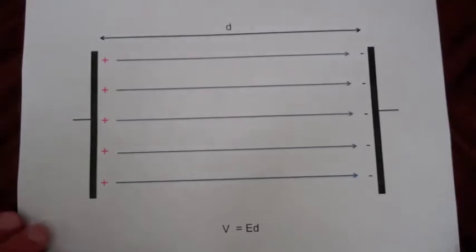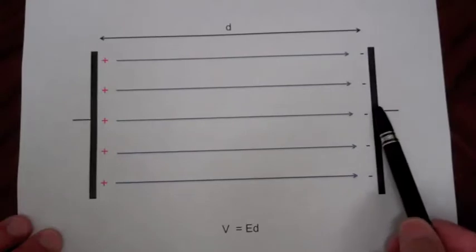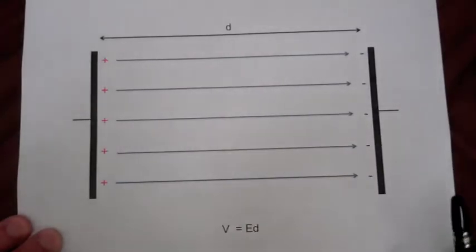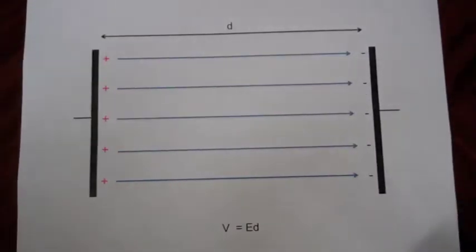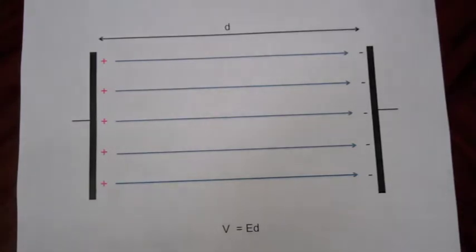Now the voltage drop is going to be minus the integral of E dot dl from the negatively charged plate to the positively charged plate, and because of the uniform electric field intensity, that will just simply be the electric field intensity times the separation of the plates.